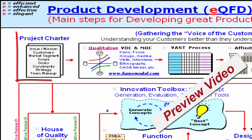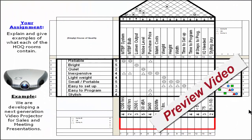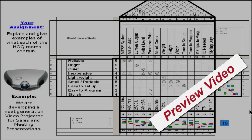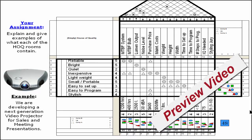For starters, we're defining the project — thinking about who the customers are, what market segments we're going after, what the scope and goals of the project are, what constraints we have, and who's going to be on the team. Down on the bottom of the House of Quality is a graph of technical assessments with your benchmarking data, and at the very bottom are calculated importance ratings. We'll take a look at each of these rooms in detail shortly.